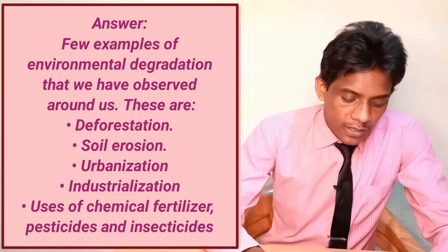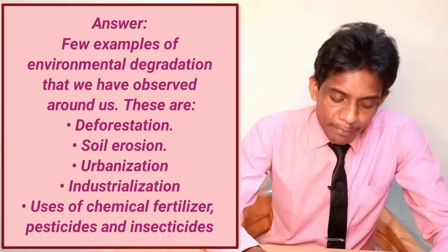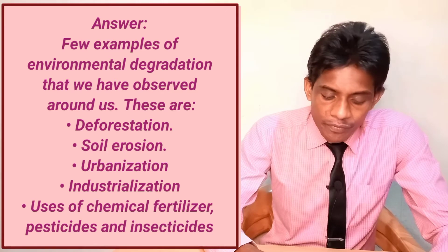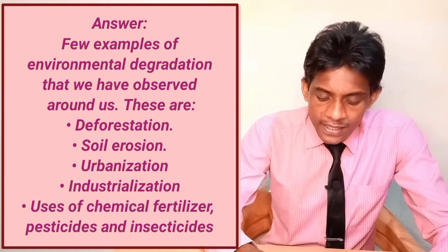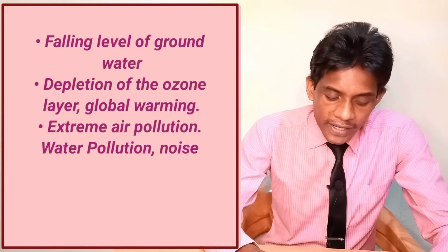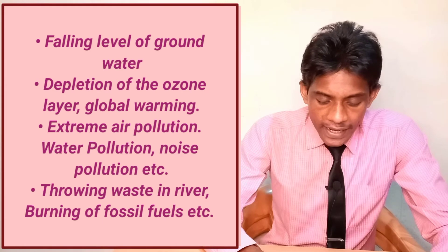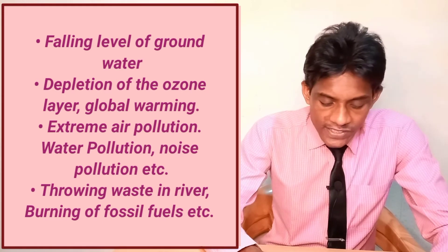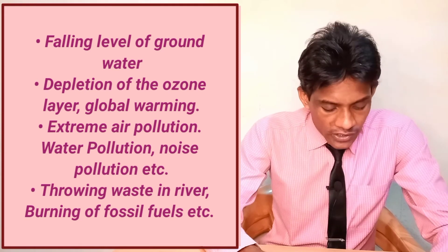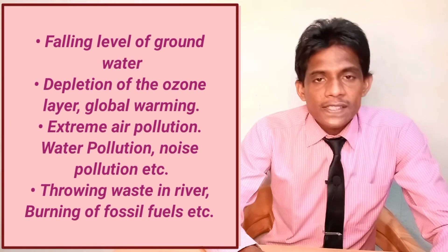Answer: A few examples of environmental degradation that we have observed around us are: deforestation, soil erosion, urbanization, industrialization, use of chemical fertilizers, pesticides and insecticides, falling levels of groundwater, depletion of ozone layer, global warming, extreme air pollution, water pollution, noise pollution, throwing waste in rivers, and burning of fossil fuels.